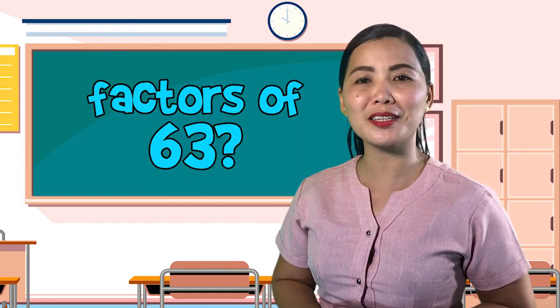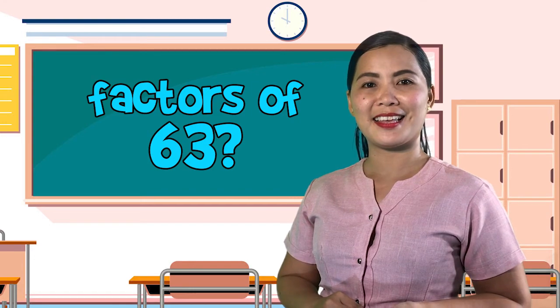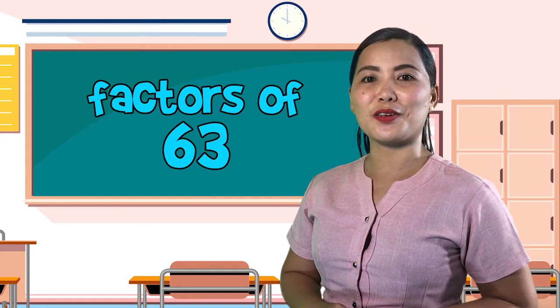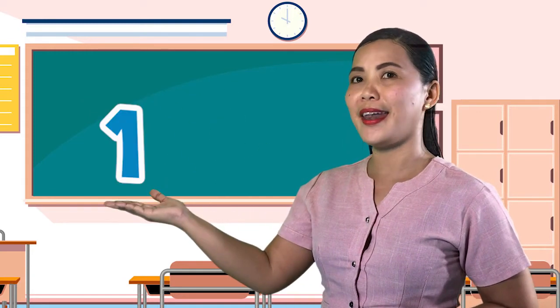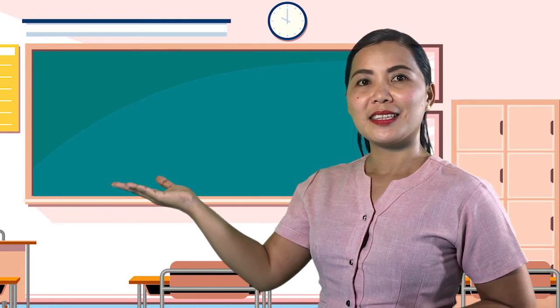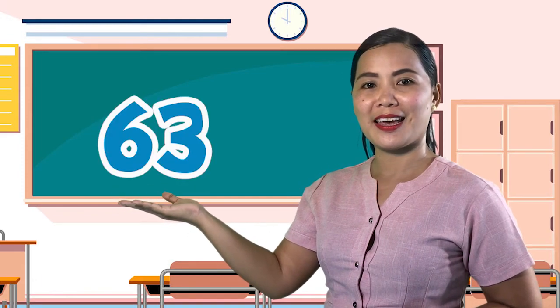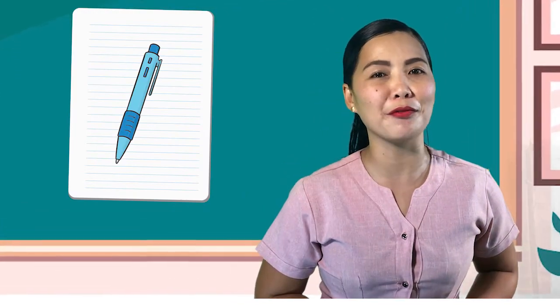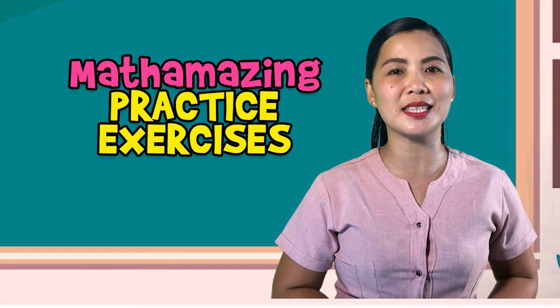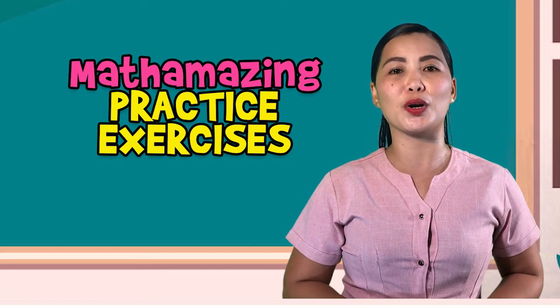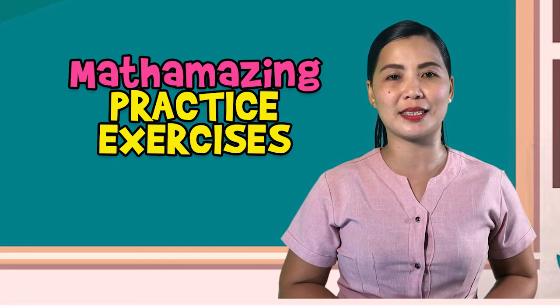How about the factors of 63? The factors of 63 are 1, 3, 7, 9, 21, and 63. Just stay right there — hold your paper and pen. We will have more Mathamazing practice exercises on identifying factors of a given number up to 100 on your learner's home task. I'll give you 1 minute to answer each item.